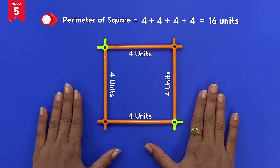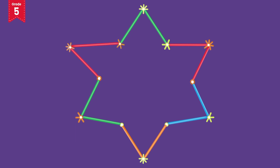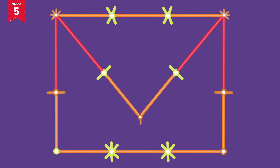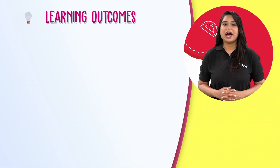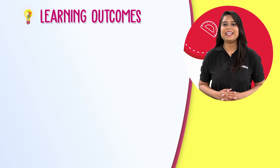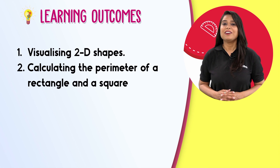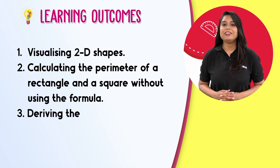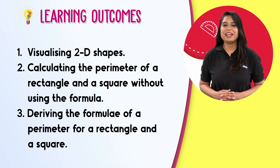Now you can try building different shapes using different pipes and connectors and calculate their perimeter. After doing this activity you will have gained expertise in the following concepts: visualizing 2D shapes, calculating the perimeter of a rectangle and a square without using the formula, and deriving the formula of perimeter for a rectangle and a square. Visualize math with Allen IntelliBrain and fall in love with learning.